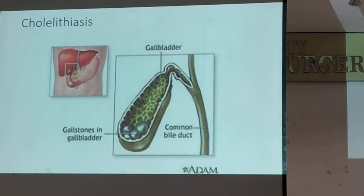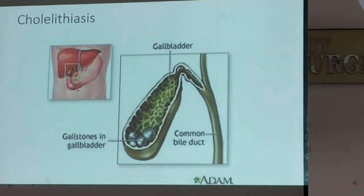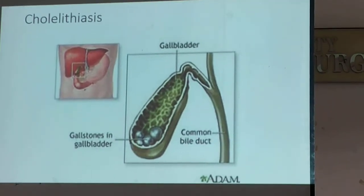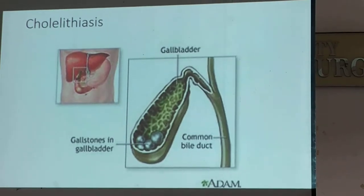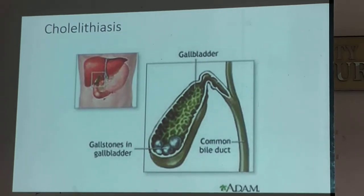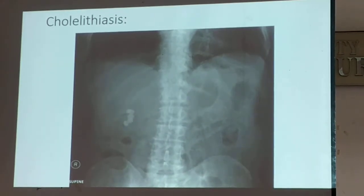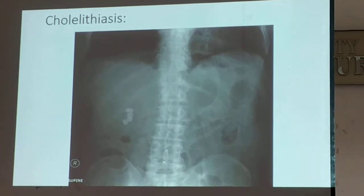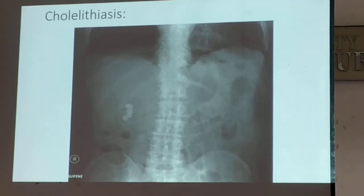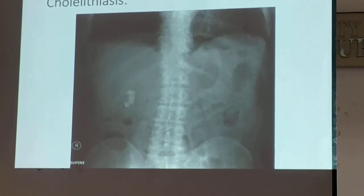You would encounter this at the ER where a patient would come past midnight saying they're experiencing pain at the epigastric area radiating to the back. So you would consider it's either cholecystitis or pancreatitis because it's at the back. This is your picture of cholecystitis. How would you know that this is not a stone in your right kidney? Because the differential for cholecystitis would be a stone in your right kidney.